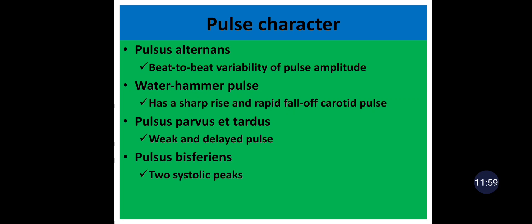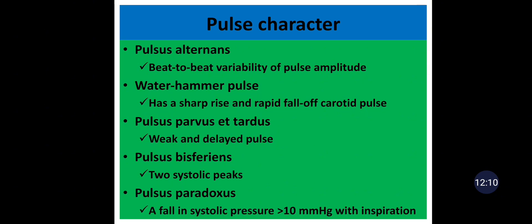Pulsus bisferiens, or bifid pulse, is the presence of two systolic peaks, found in patients with hypertrophic cardiomyopathy. Pulsus paradoxus is a fall in systolic pressure greater than 10 mmHg with inspiration. It is a misnomer because it involves pressure, not pulse. It is an exaggeration of the normal physiologic decline in systolic pressure during inspiration.